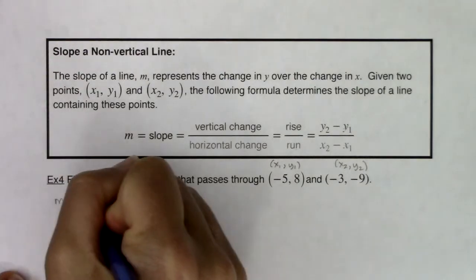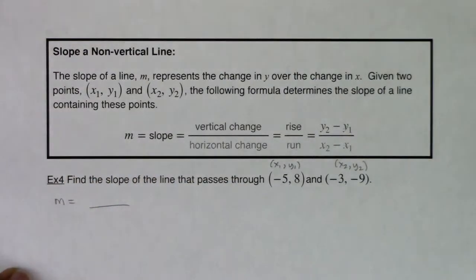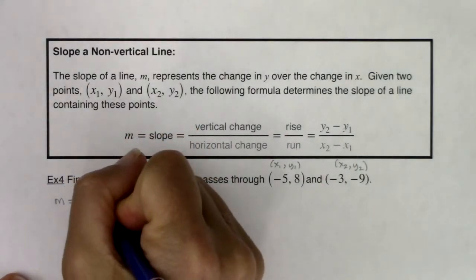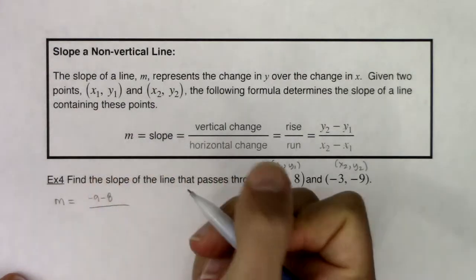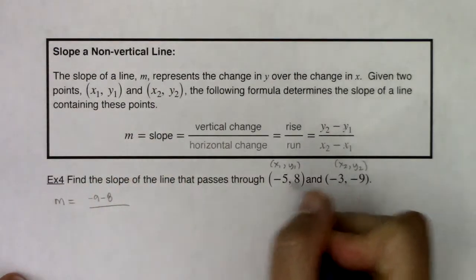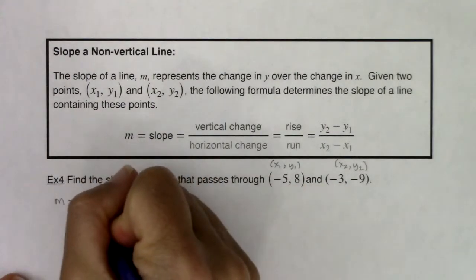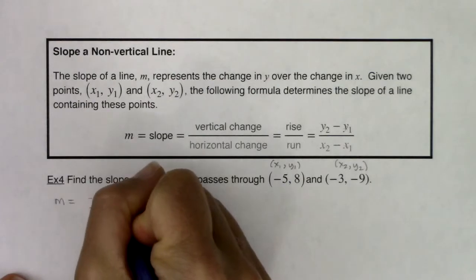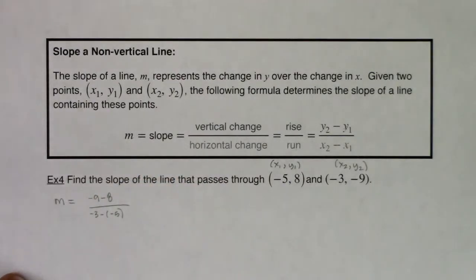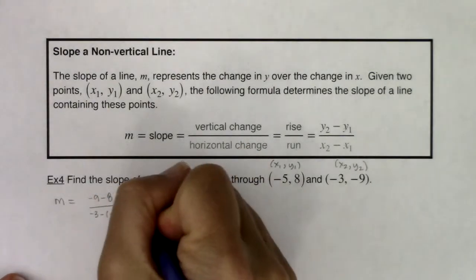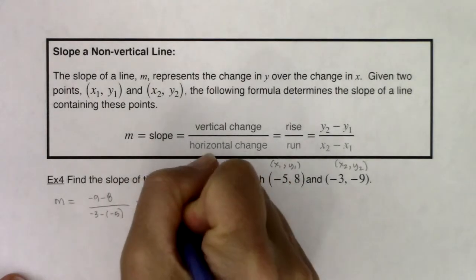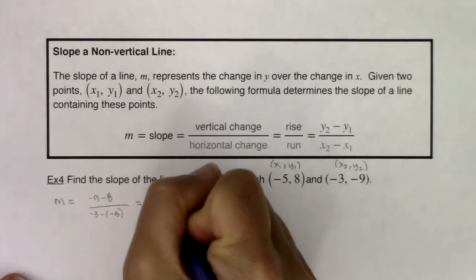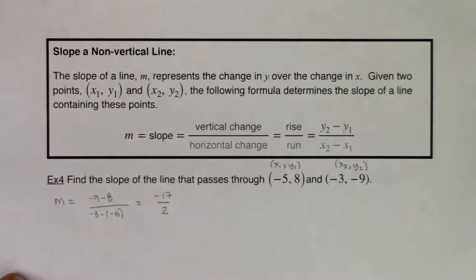So if I wanted to find the slope, it's a ratio, change in y over change in x. So let me do y2 minus y1, that would be -9 minus 8. And then if I do x2 minus x1, that will be -3 minus, and be careful, you're going to subtract a -5. So ultimately, when I do this slope, I get -17 over positive 2.